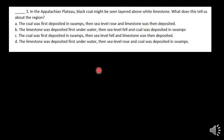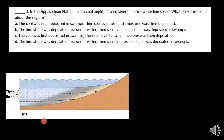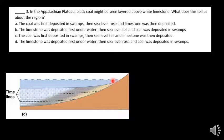In the Appalachian Plateau, black coal might be seen layered above white limestone. What does this tell us about the region? Generally, you have a depositional environment based upon whenever a stream comes out carrying sand, silt, and clay. It'll lose energy and the sand will drop out first — that's why you have sandy beaches.